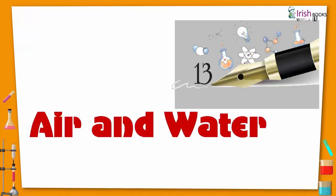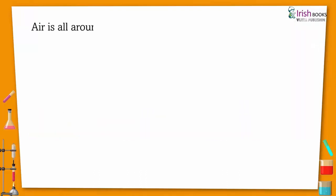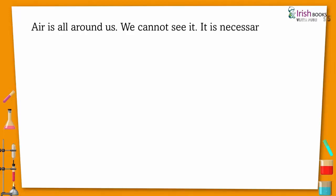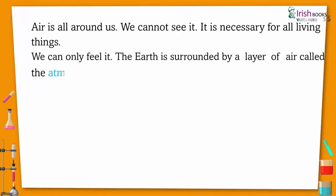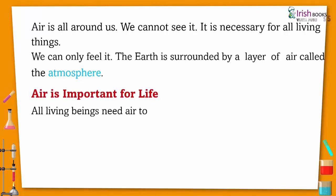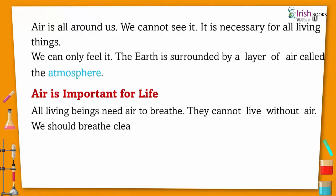Water is all around us. We cannot see it, and it is necessary for all living things. The earth is surrounded by a layer of air called the atmosphere. Air is important for life — all living things need air to breathe. They cannot live without air. We should breathe clean and fresh air.